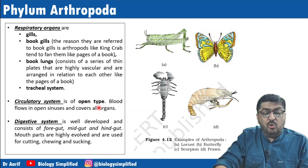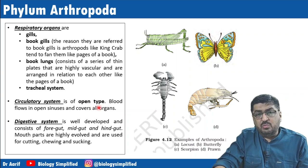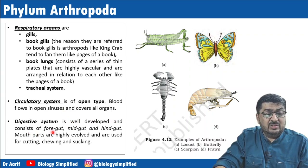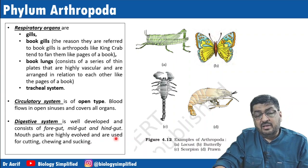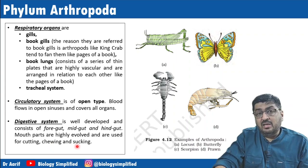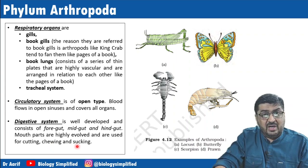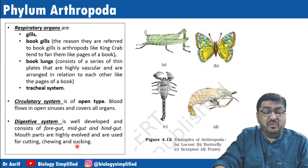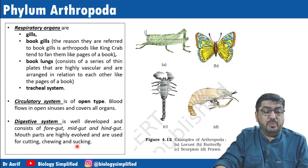The circulatory system is open type, as we studied in cockroach. The digestive system is well developed and consists of foregut, midgut, and hindgut. Mouth parts are highly evolved and used for cutting, chewing, and sucking. In cockroach we studied the labrum, labium, mandible, maxilla, and hypopharynx as parts of the mouth.